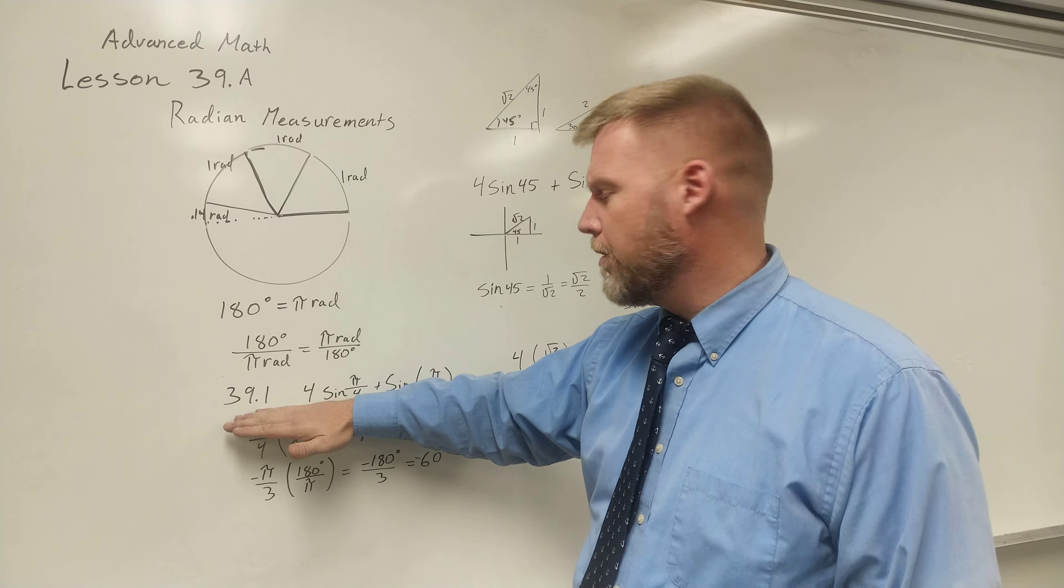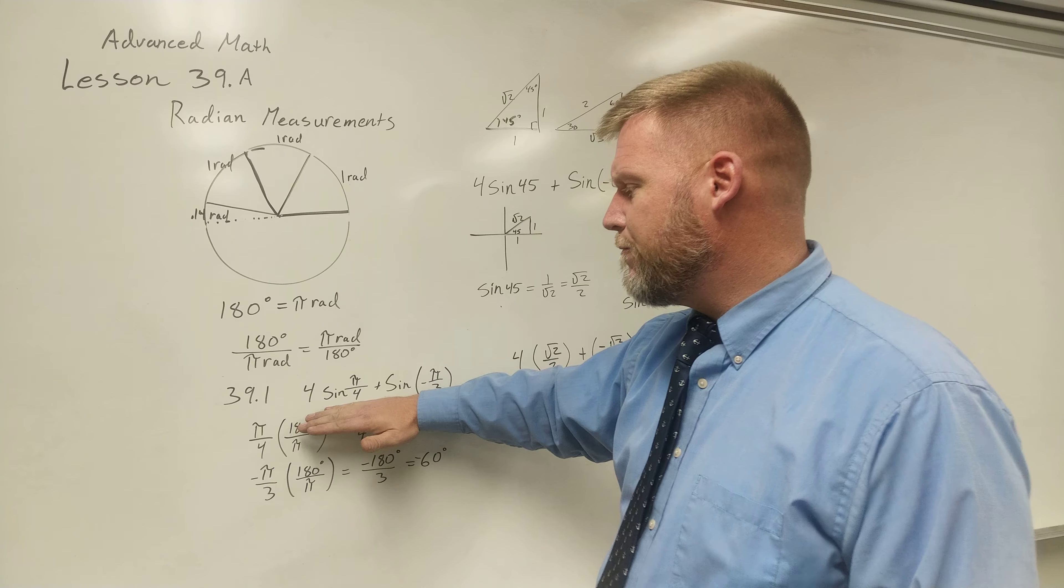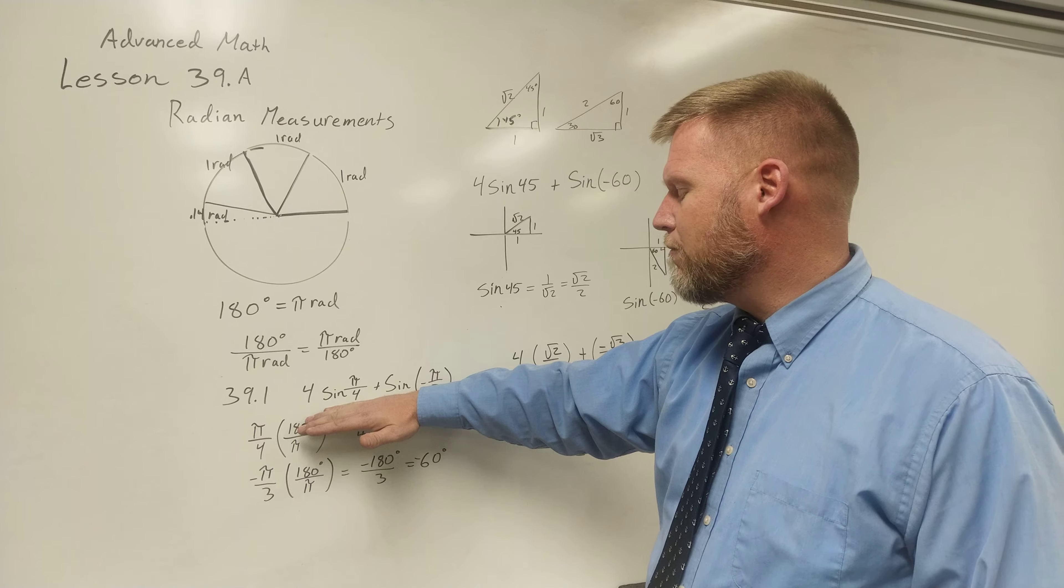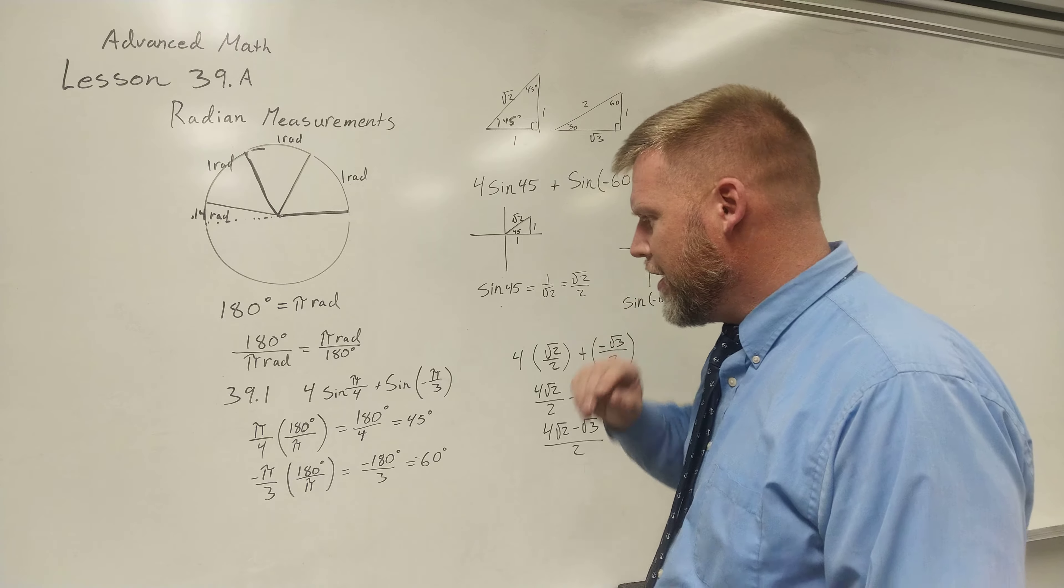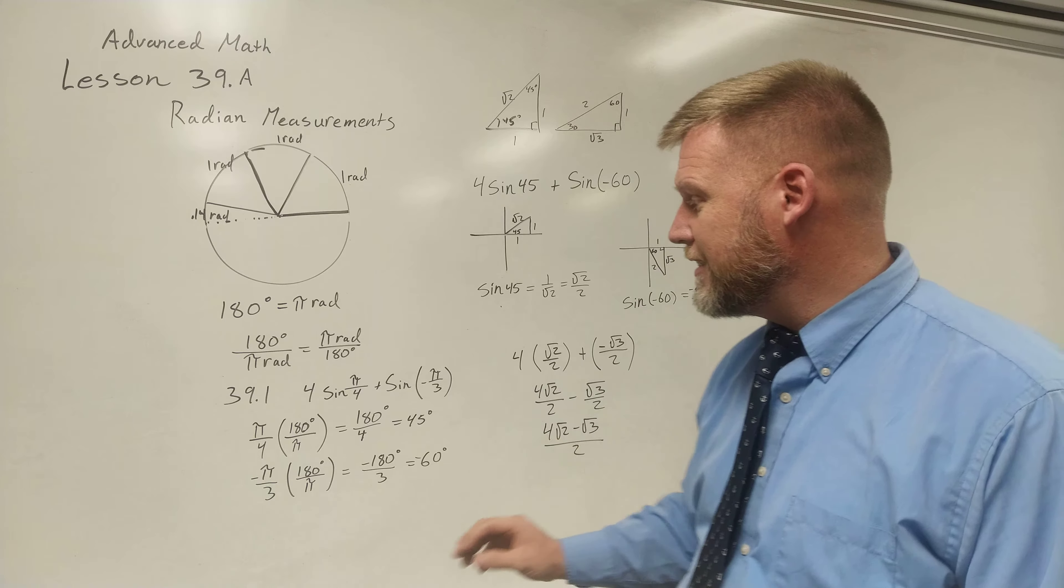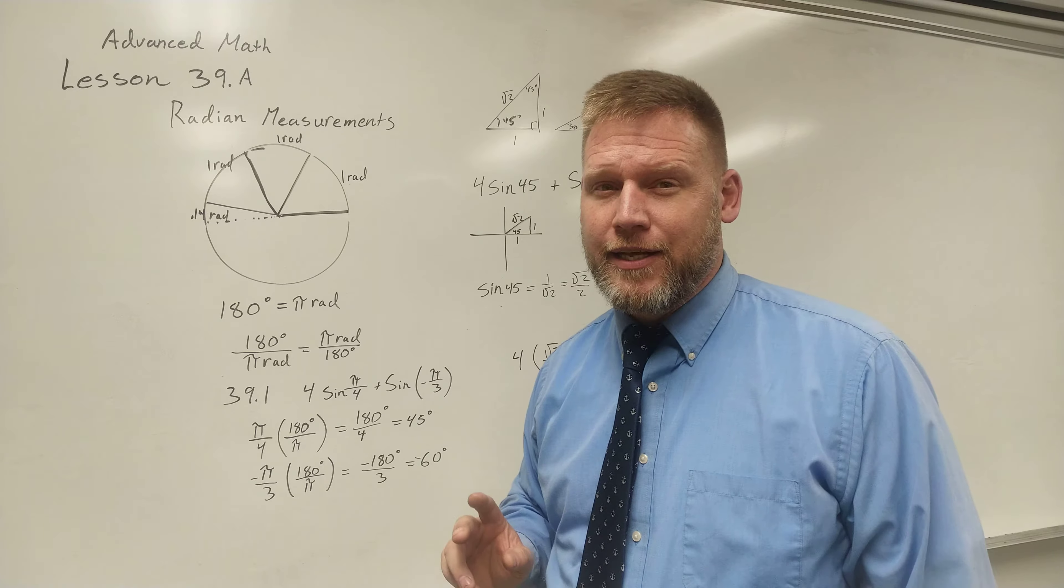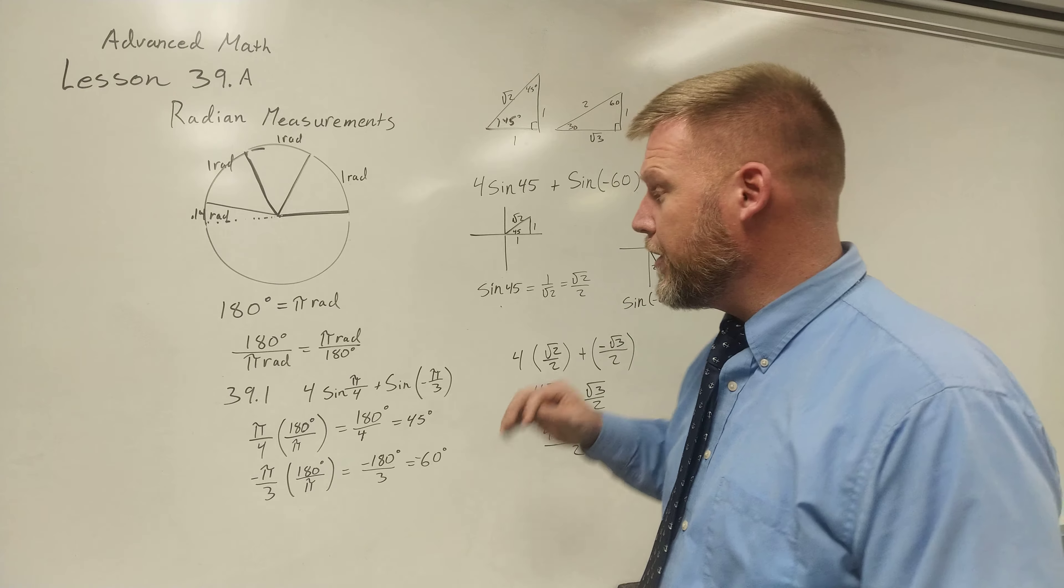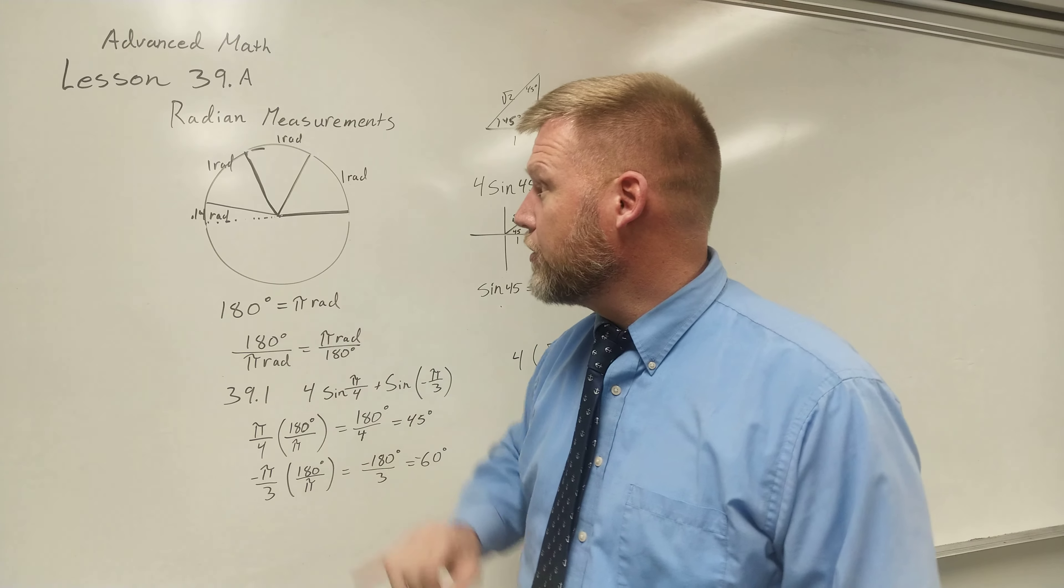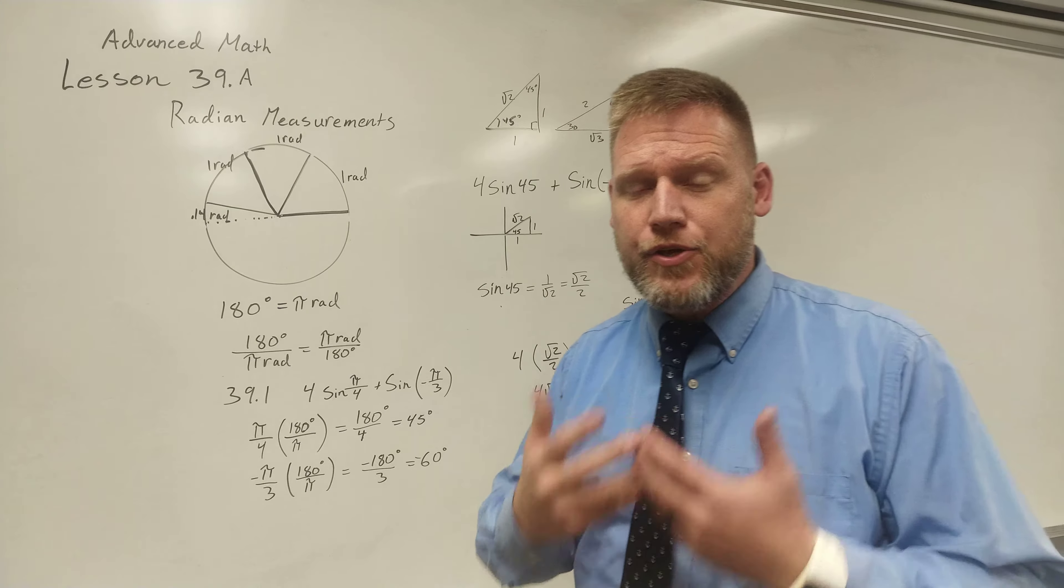Look at example 39.1, and it says, let's add 4 sine π/4 plus sine of negative π/3. Notice that it does not have to say π radians. And this is a change from us with labeling. Usually, we're really careful with the labeling. We say, there's our degree mark, and that's the units.